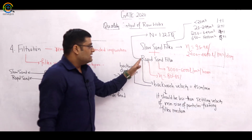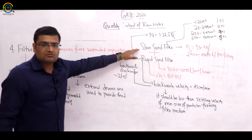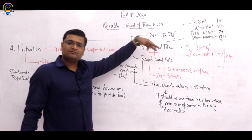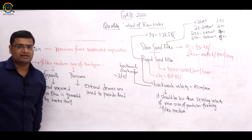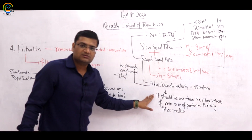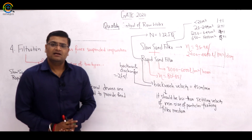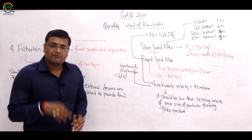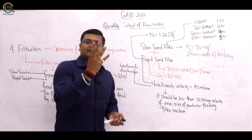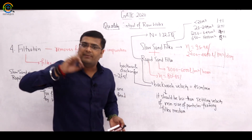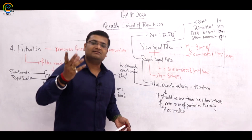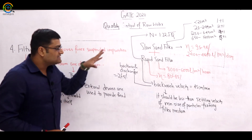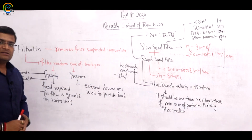Questions may be asked about calculating number of filters, backwash velocity concept, and the role of gravel. Gravel is not a filter medium — gravel acts only as a supporting layer for the sand medium. This is the basic concept of the filtration process. Now we will solve questions based on filtration.